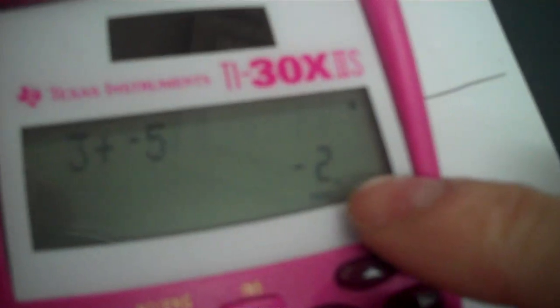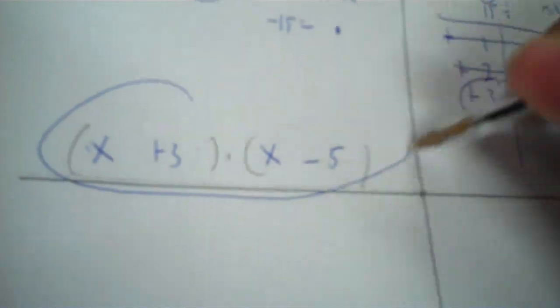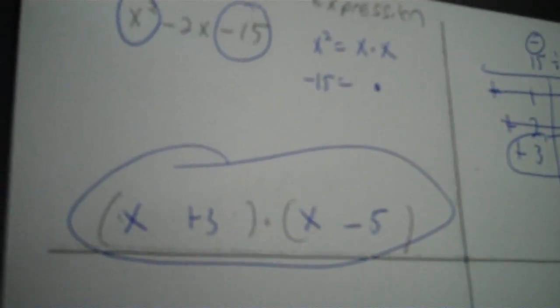Then 15 divided by 3 is 5, so I put 3 and 5. Now I add those two together and I have negative 2, so we're good. Circle that. So you put positive 3, negative 5. That's your answer.